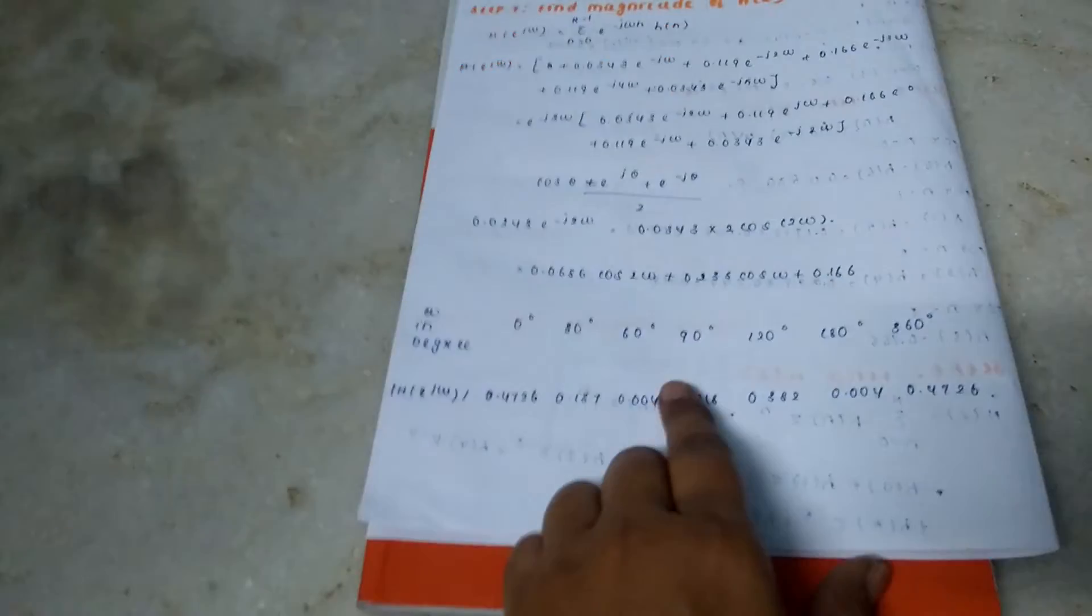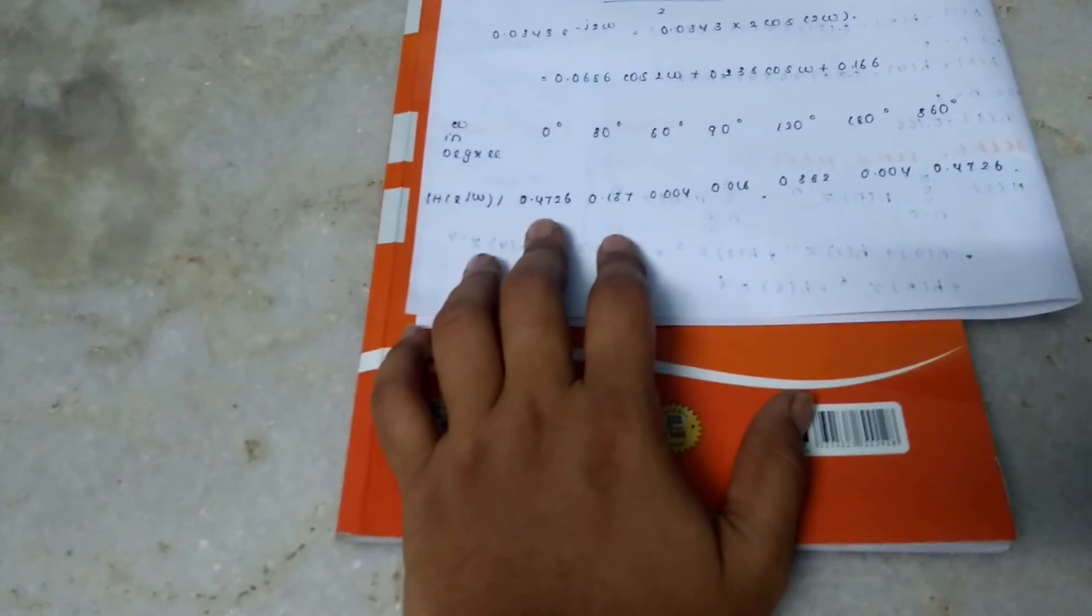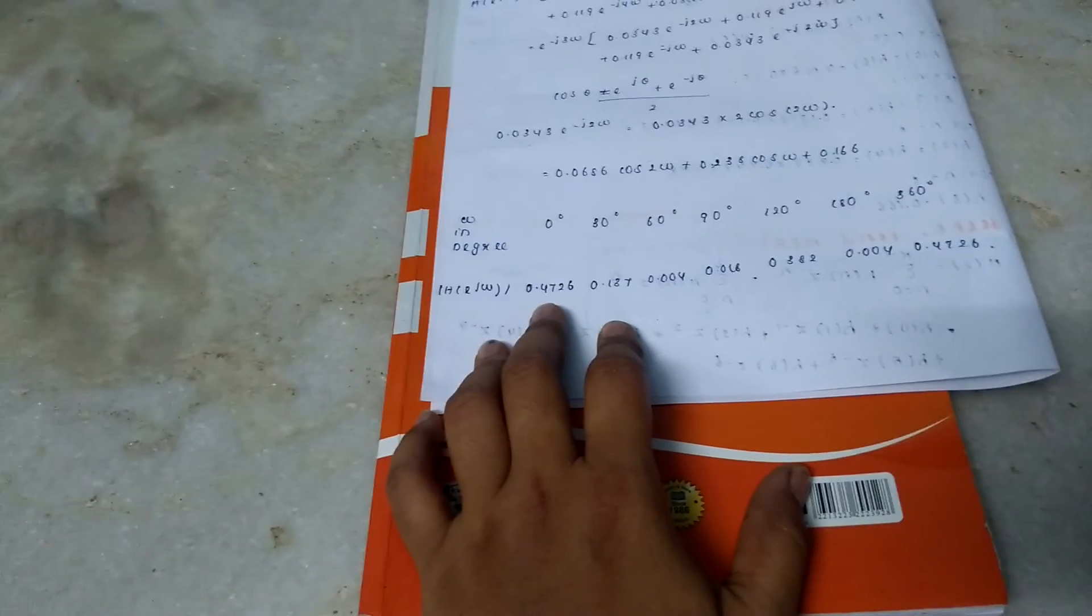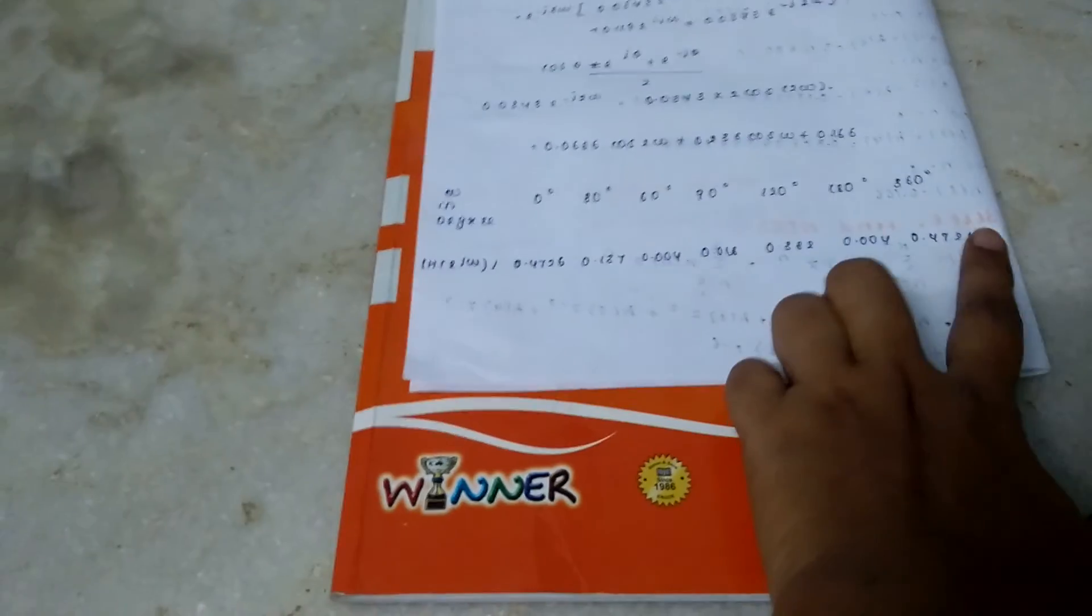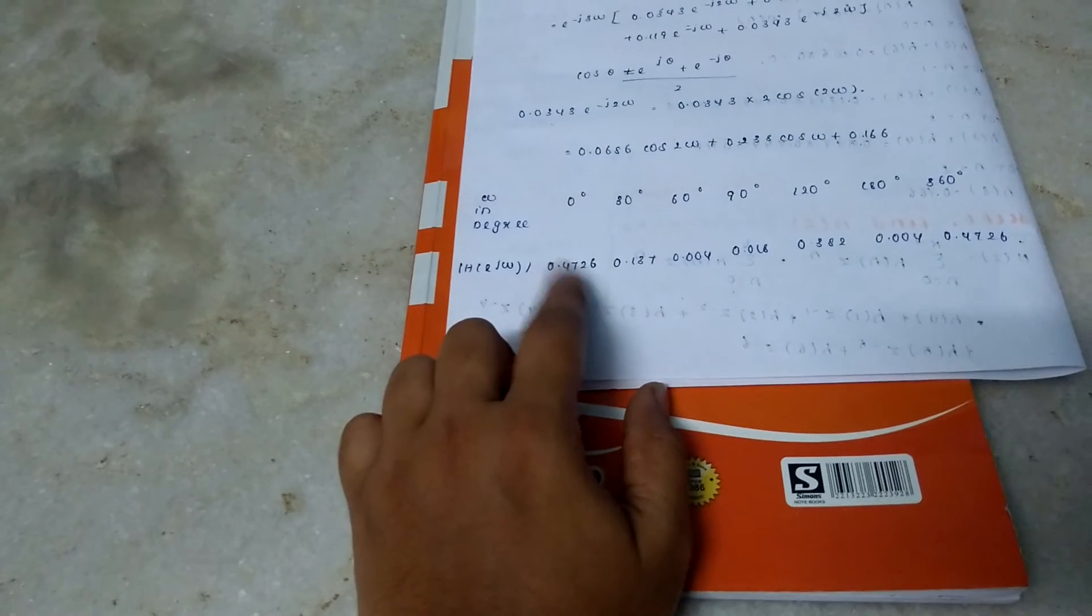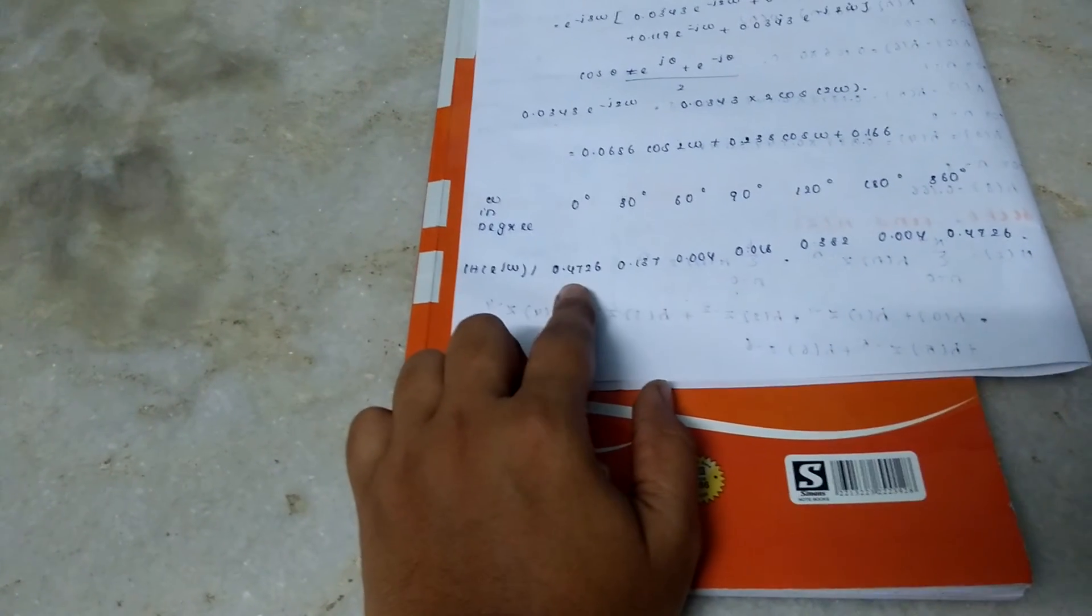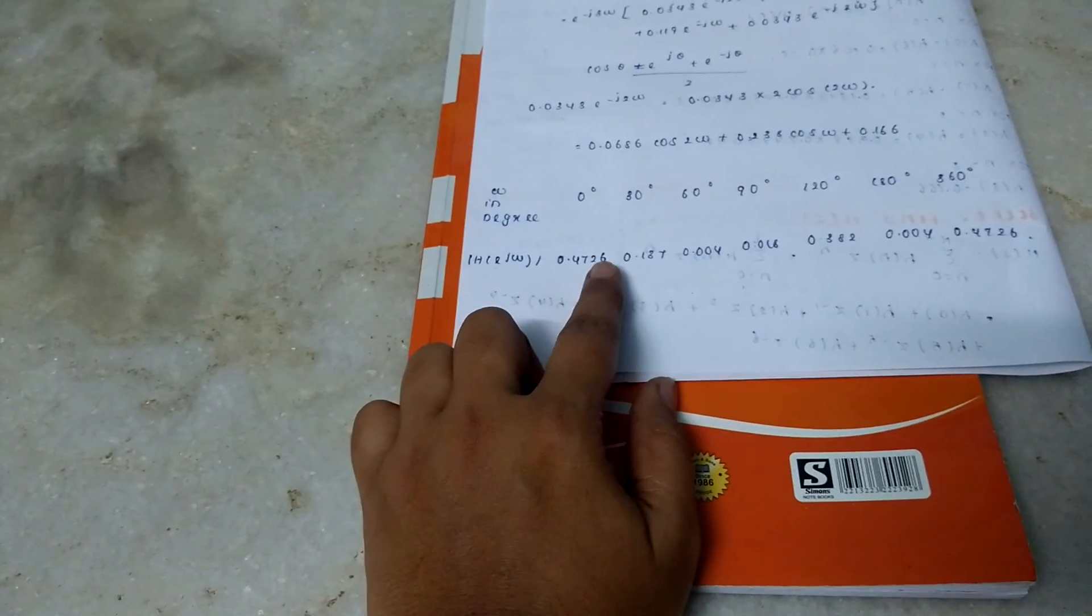In the last step, write your ω in degrees, that is from 0 to 360, and calculate the value and convert it to degree mode 0.4726.